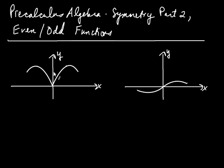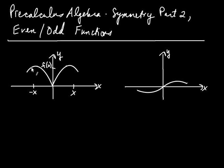Consider this graph here on the left. If you plug in some value x, the output — going up to x on the function — gives you a y-coordinate, which we call f of x. Now if instead of plugging in x, you go just as far but to the left and plug in negative x — so if x was 5, that would be negative 5 — you've gone just as far to the left as you went to the right. The y-coordinate for that point turns out to be the same as before.